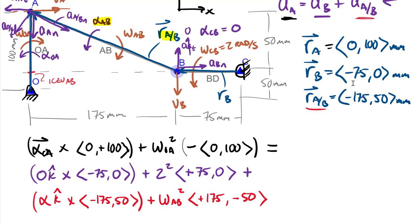Looking back at the previous example to insert values: omega of OA equals 0.428 radians per second, and omega of AB equals 0.857 radians per second. We're left with two unknowns — alpha of AB and alpha of OA — which is exactly what we want. These are the two quantities we're solving for in this example.